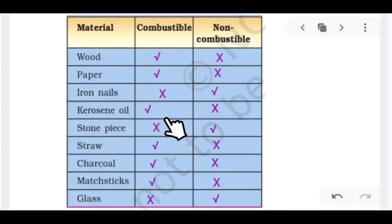There are three columns: one for the material whatever you have taken, second is combustible, and third is non-combustible. Wood is combustible, yes. Paper is combustible. Iron nails are non-combustible. Kerosene oil is combustible. Stone pieces are non-combustible. Straw is combustible, yes I have seen straw is combustible.